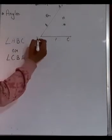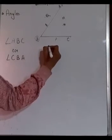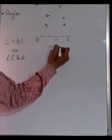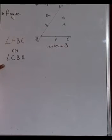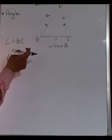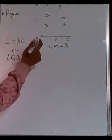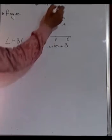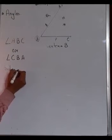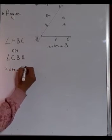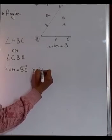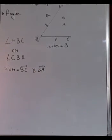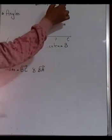You can write angle ABC or angle CBA. The important thing to keep in mind is that the vertex must be written in the middle. The vertex here is B. Whenever you name an angle, the vertex goes in the middle. The two arms or sides of this angle are BC and BA.